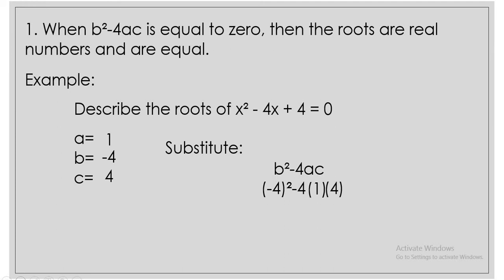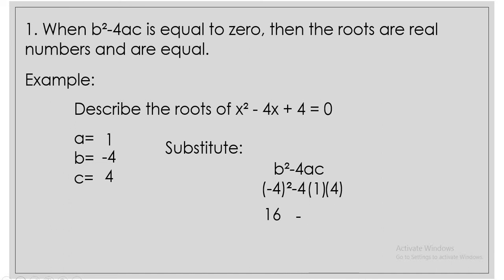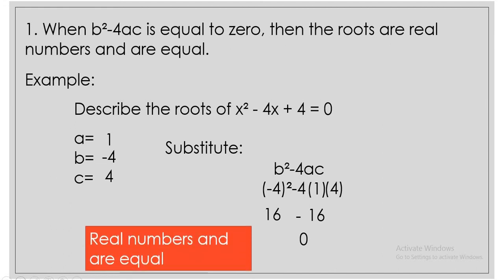So let us now simplify it. Negative 4 squared is 16. 4 times 1 times 4 is 16. So 16 minus 16 is 0. So since b squared minus 4ac is equal to 0, the roots are real numbers and are equal.